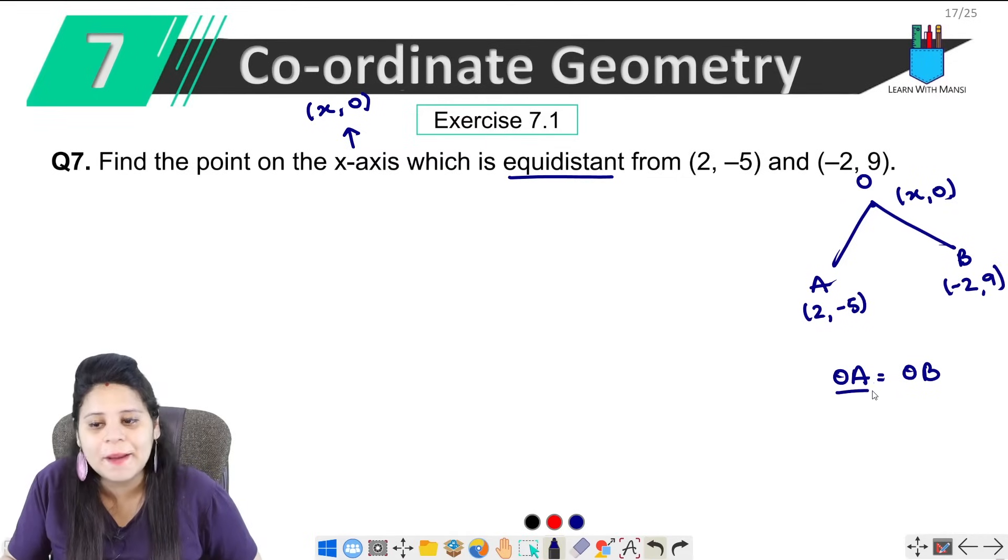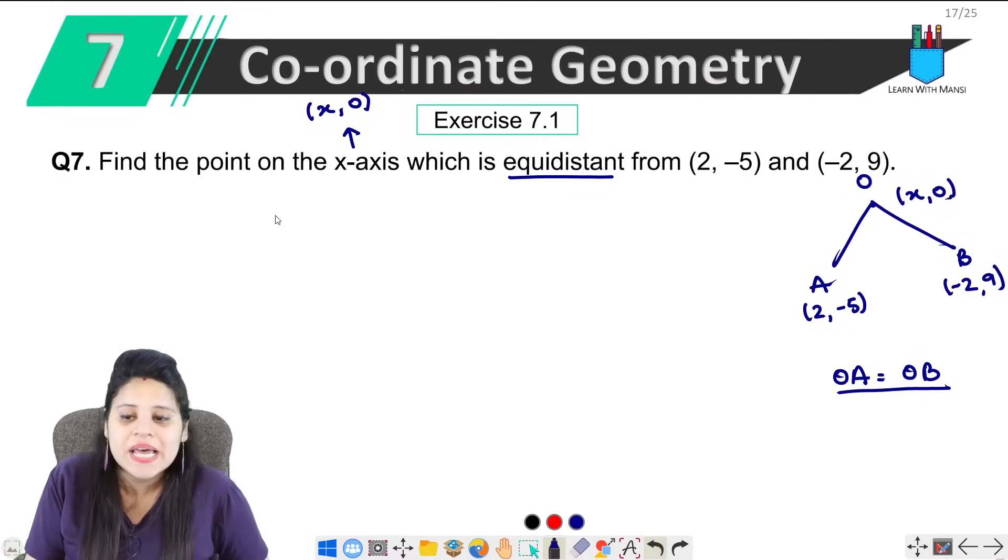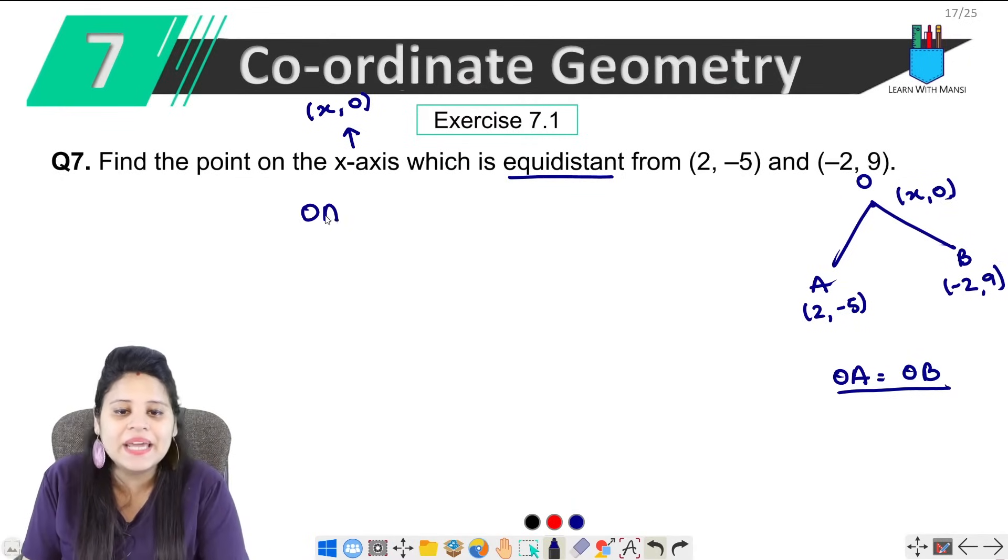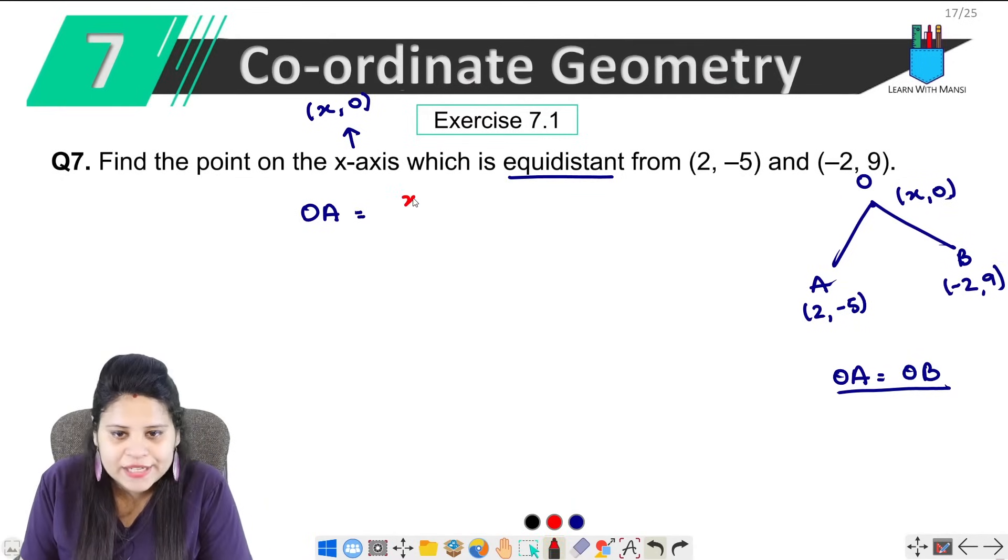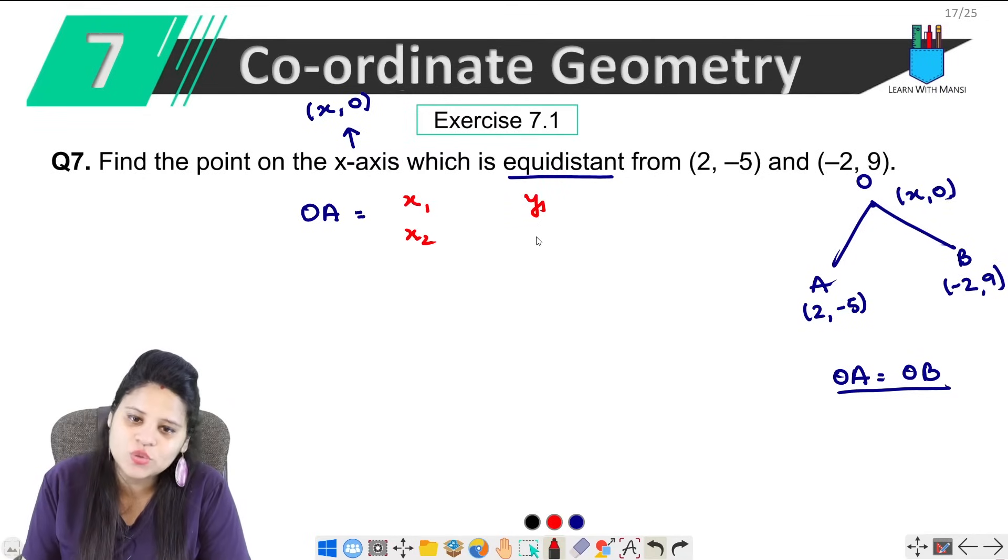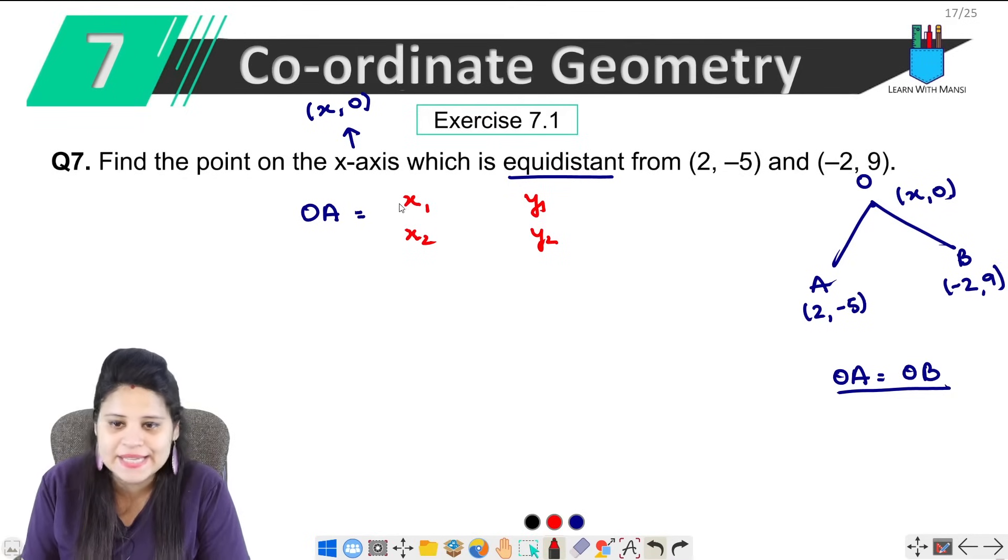Now with this, we can find the value of x. First of all, we will find distance OA. So coordinates, let's write x1, y1, then x2, y2. Now let's see what is x1. What are O coordinates? x and 0, so x1 is x and y1 is 0. We will see A coordinates. This will be x2 and y2.